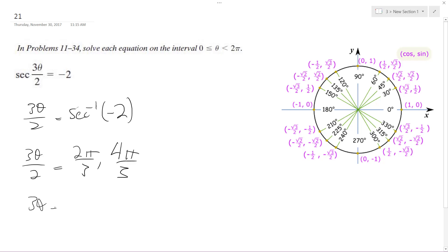So I multiply both sides by 2, and I get 4 pi over 3 and 8 pi over 3, and then divide by 3.